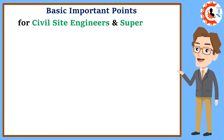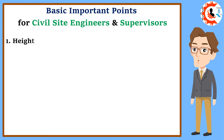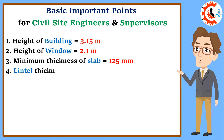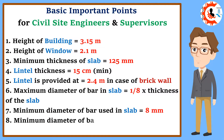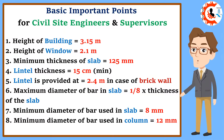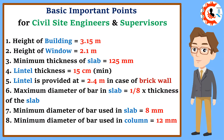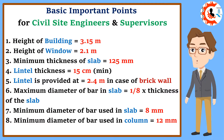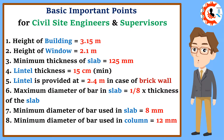Basic important points for civil site engineers and supervisors. 1. Height of building equals 3.15 meters. 2. Height of window equals 2.1 meters. 3. Minimum thickness of slab equals 125 millimeters. 4. Lintel thickness equals 15 centimeters minimum. 5. Lintel is provided at 2.4 meters in case of brick wall.